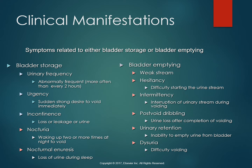Lower urinary tract symptoms, or LUTs, are experienced in patients who have UTIs of both the upper and lower urinary tract. We call them lower urinary tract symptoms because they're happening at the bladder or lower bladder and urethra, occurring from a problem with emptying or a problem with storage. Sometimes the urine can even contain blood — we call that hematuria — which turns our urine red. Or sometimes it can be very cloudy from sediment, all the little white blood cells and bacteria. So we see changes in our actual urine color.